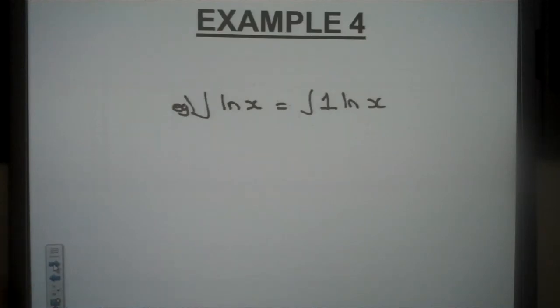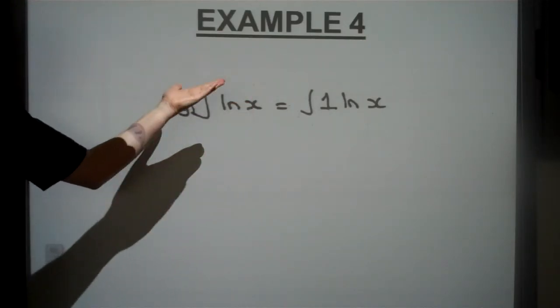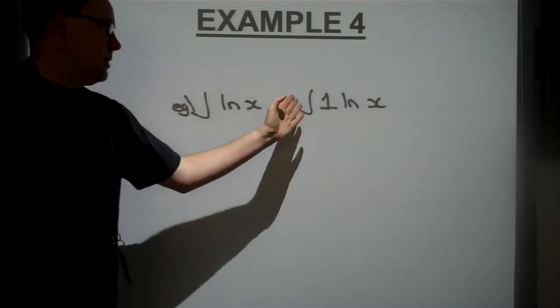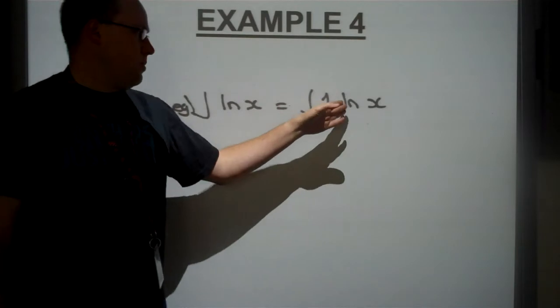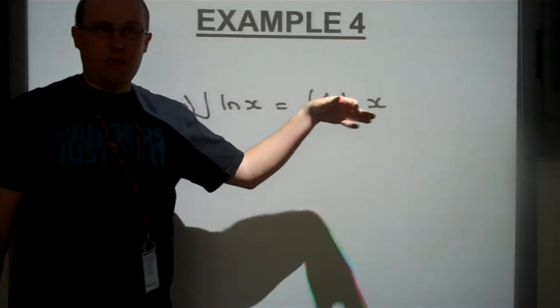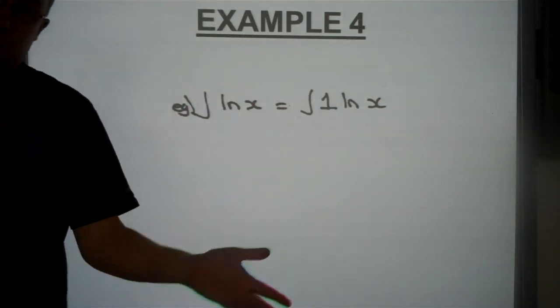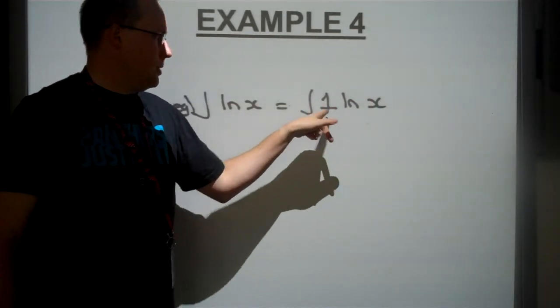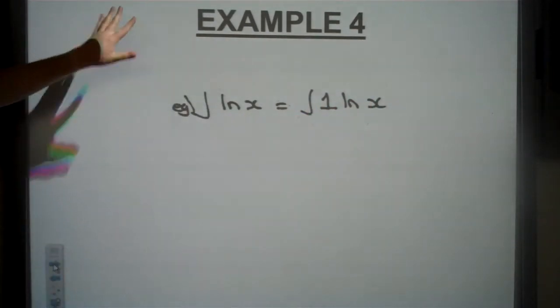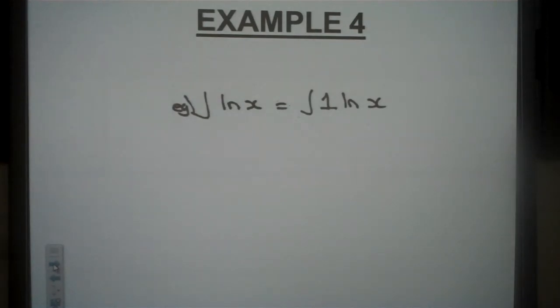Now for the fourth one, the integral of ln of x, having said we don't know how to do that, we can actually work it out if we say the integral of 1 times ln of x. Now as you saw from the previous example, there's no point when this is dv/dx, otherwise we're going to have to integrate ln of x, which we don't know. So we're going to call this one u, and we're going to call this one the dv. And this is another one I think you should make sure you're very familiar with as well.